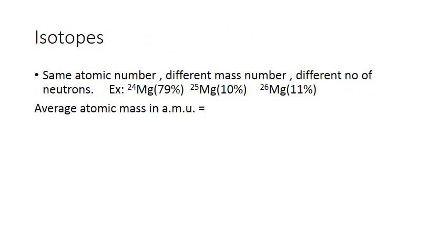Regarding isotopes: isotopes differ in their mass number and number of neutrons, but they have the same atomic number. For example, magnesium exists in nature as three isotopes: Mg-24, Mg-25, and Mg-26. Each isotope has a different percentage relative abundance. Mg-24 with 79% is the most abundant, and Mg-26 with 11% is the heaviest isotope.